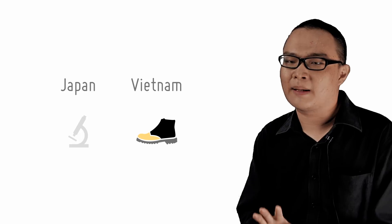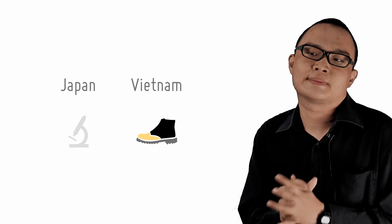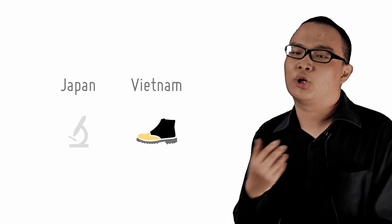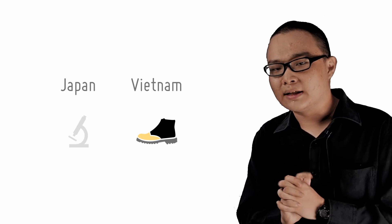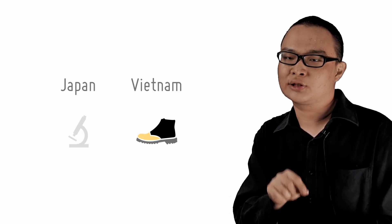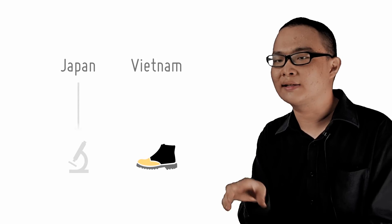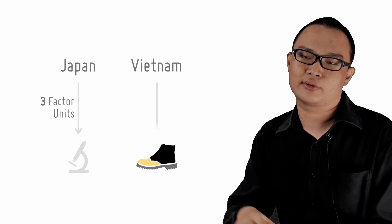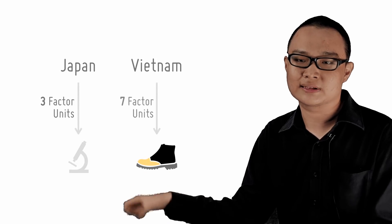This is by far the trickiest part — you must get the numbers right or you'll end up disproving centuries of economic thought. Here, Japan transfers three factor units to microscopes, and Vietnam transfers seven factor units from microscopes to shoes.